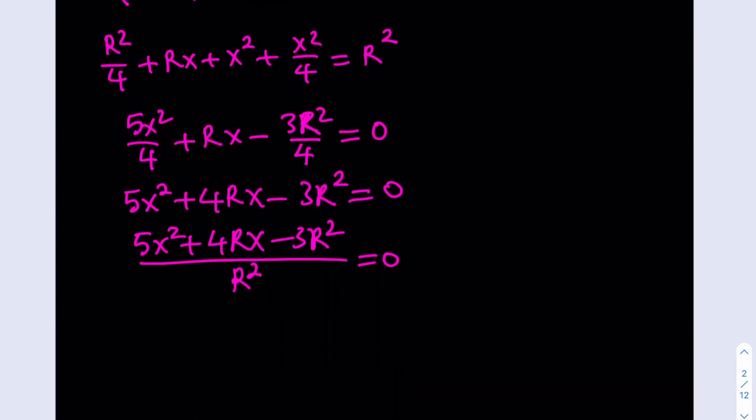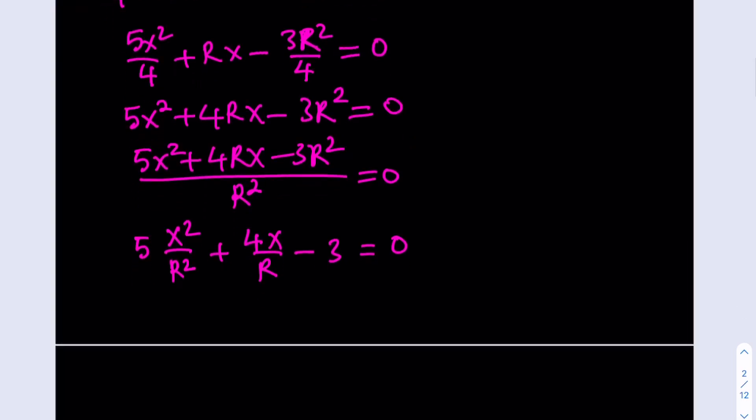From here I'm going to divide term by term. This gives me 5 times x squared over r squared plus 4 times x over r and the constant is negative 3. Now this is nice because we can turn it into a quadratic equation where we call x over r equal to u, and this gives us 5u squared plus 4u minus 3 equals zero.